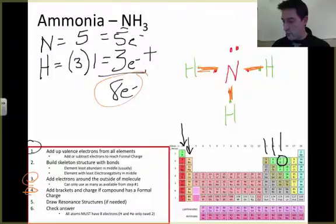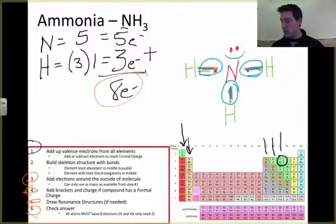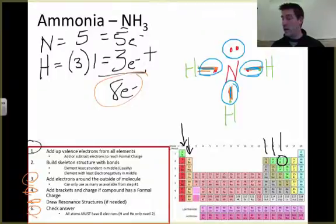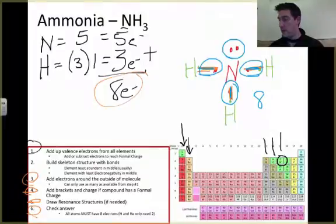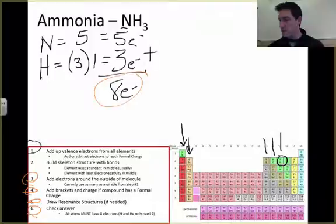And all we've got to do, we don't need brackets because we don't have a charge. We don't need resonance structures. We just need to check our answer. Again, hydrogen only needs to have two valence electrons. So this hydrogen has two right there. This hydrogen has two. This hydrogen has two. Nitrogen wants to have eight. So nitrogen is getting two from this bond, two from this bond, two from this bond, and two. Those are called a lone pair. That gives it a total of eight. So we've checked our answer. Everybody's perfectly happy. That means our structure for ammonia is just like this.